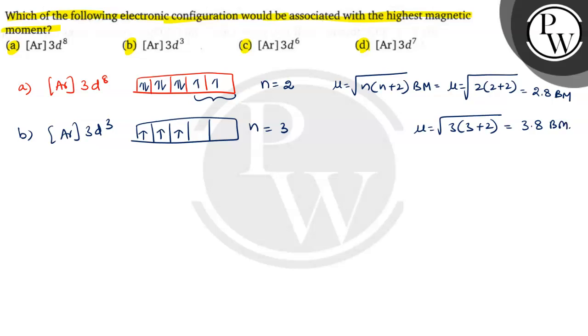Here, magnetic moment mu is directly proportional to the number of unpaired electrons. If more number of unpaired electrons, more is the magnetic moment. Magnetic moment depends on the number of unpaired electrons.